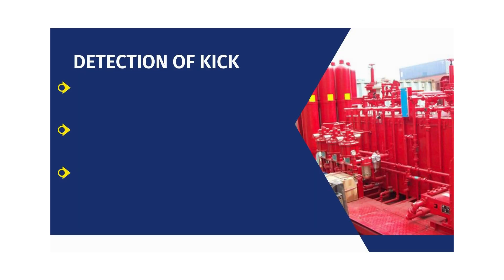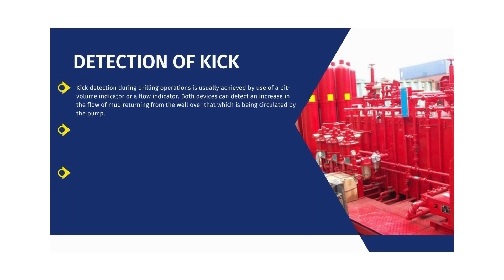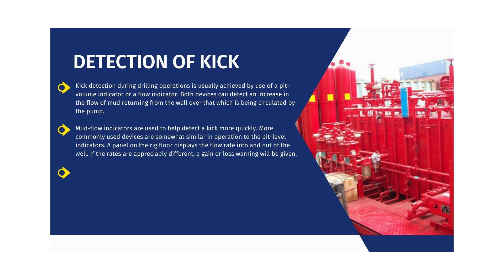Kick detection during drilling operations is usually achieved by use of a pit volume indicator or a flow indicator. Both devices can detect an increase in the flow of mud returning from the well over that which is being circulated by the pump. Mud flow indicators are used to help detect a kick more quickly.